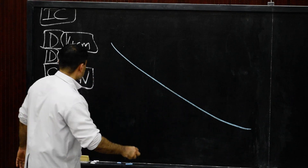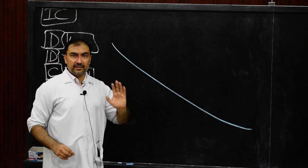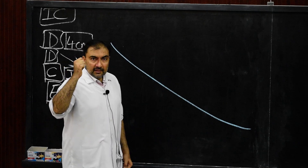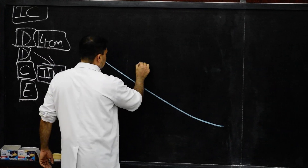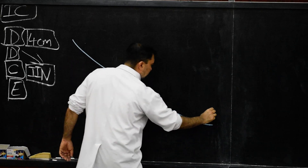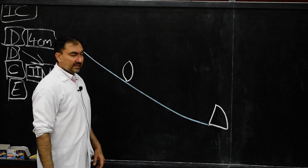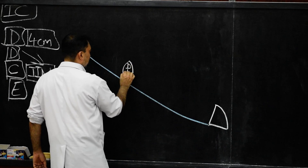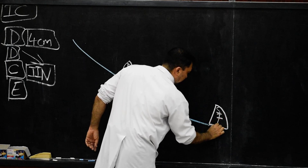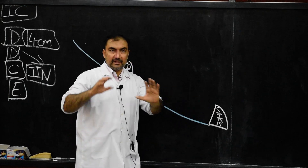What is the extent? The extent will be from the deep inguinal ring to the superficial inguinal ring. Let me draw with white color: the deep inguinal ring over here and the superficial inguinal ring over here. So the extent of the inguinal canal will be between the deep and superficial inguinal rings.